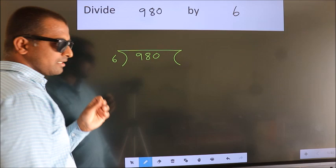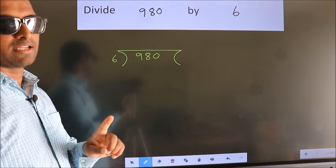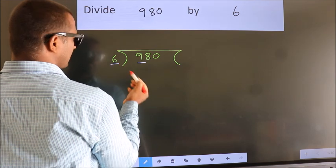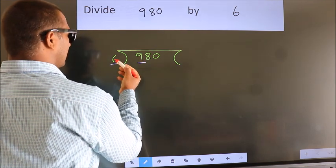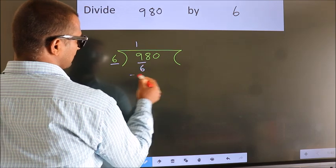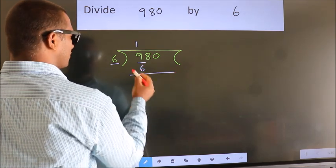This is your step 1. Next, here we have 9, here 6. A number close to 9 in the 6 table is 6 once, which is 6. Now, we should subtract.